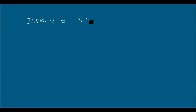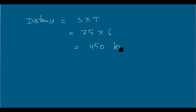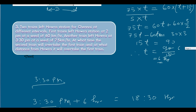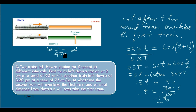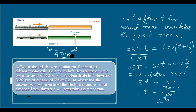Now we calculate the distance from Havla where the overtaking occurs. For the second train: distance equals speed multiplied by time, which is 75 kilometers per hour multiplied by 6 hours, equaling 450 kilometers. Therefore, the second train overtakes the first train at a distance of 450 kilometers from Havla.